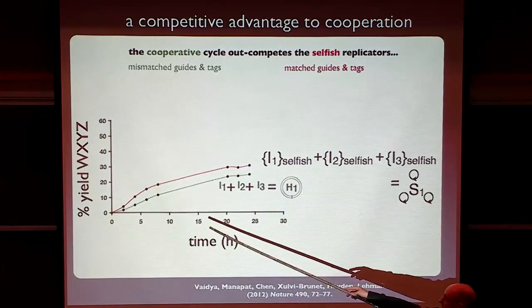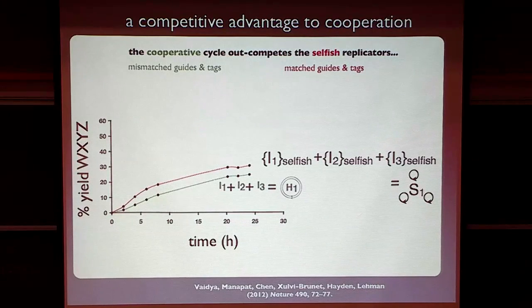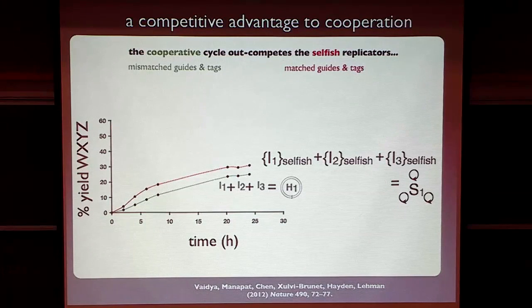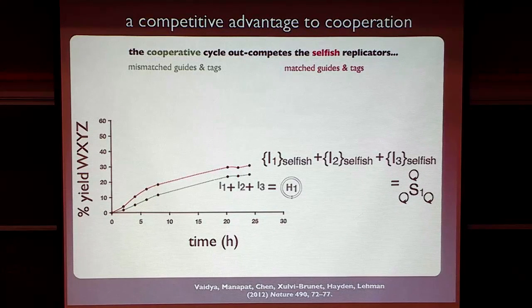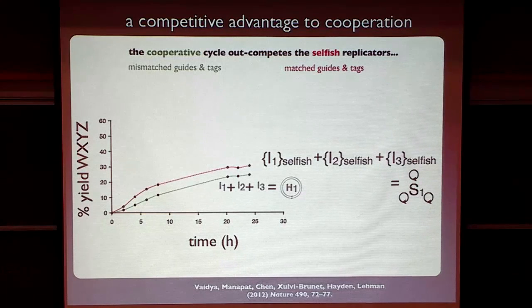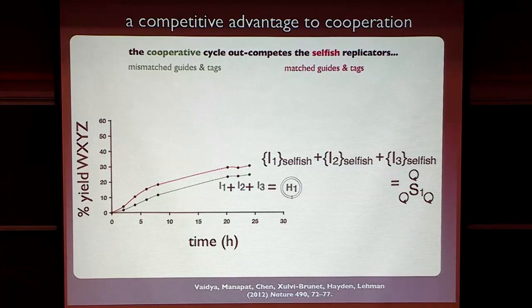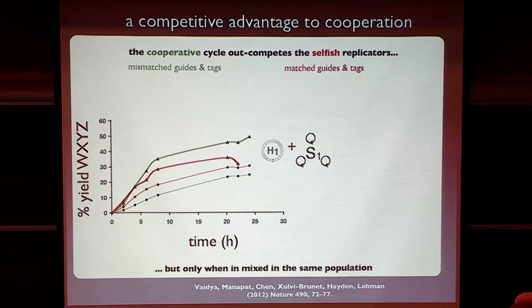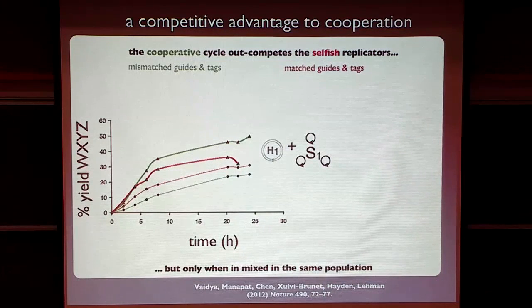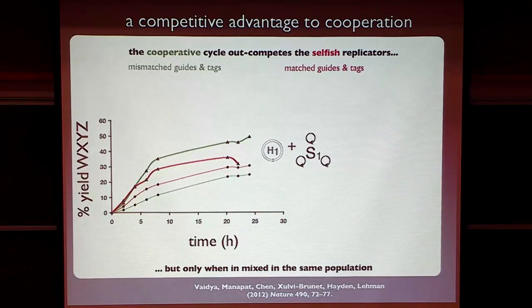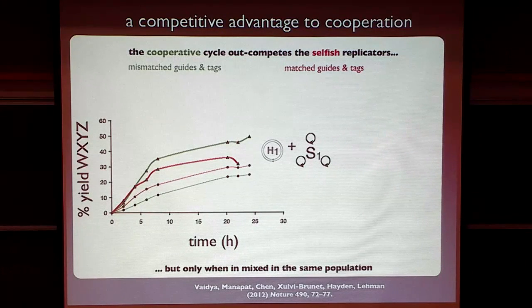And so we pitted them, not together, but separately. And, unfortunately, I have bad news. Selfishness is better than cooperation, which is not what I was hoping would happen. But then we thought, well, let's throw all of them together in the test tube at the same time and see what happens. If you throw them all together in the test tube at the same time, you get a reversal of fortune. You actually see that when everything is forced to exist in the same reaction milieu and compete for the same limiting resources, the cooperative system outcompetes the selfish system.